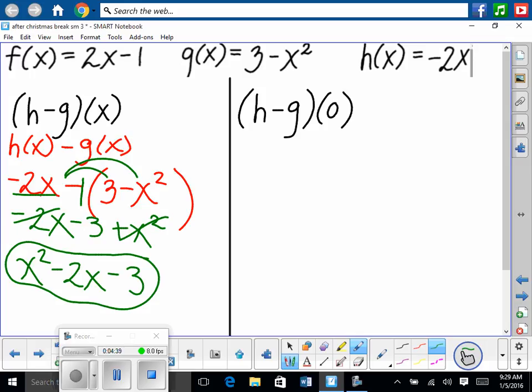So (h-g)(0). Well, we already did (h-g)(x). So now we're just plugging in 0. So 0² - 2(0) and then -3. Plugging in 0 wherever there's an x. So we have 0. -2 times 0 is 0. So -0 - 3. 0 - 0 is 0, 0 - 3 is -3.